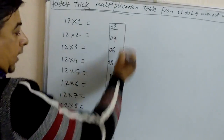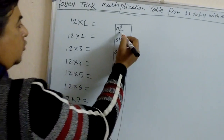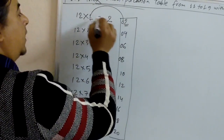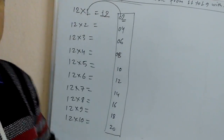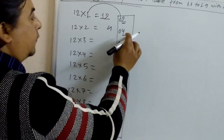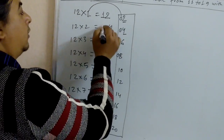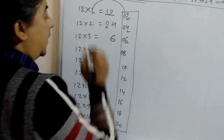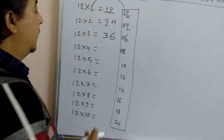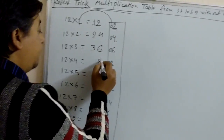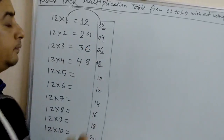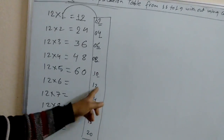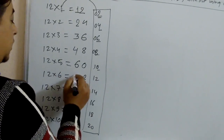Now start. Keep the last digit as it is. Here it is 2, so keep 2. Then take this 1 and plus 0 — 0 plus 1 equals 1. So 12×1 is 12. Last digit keep the same: this is 4, keep 4. 0 plus 2 is 2. So 12×2 is 24. Last digit is 6, keep the same. 0 plus 3 is 3. So 12×3 is 36. Keep last digit same. 0 plus 4 is 4. So 12×4 is 48. Last digit is 0, give 0 here. 1 plus 5 is 6. Last digit same — there is 2. 1 plus 6 is 7. So 12×6 is 72.